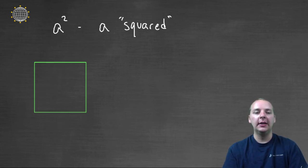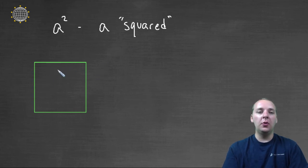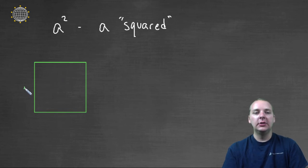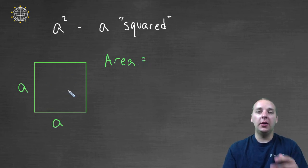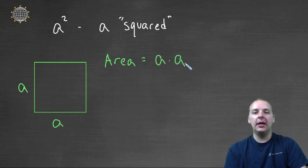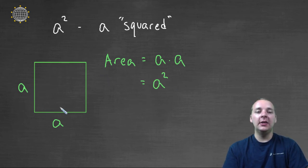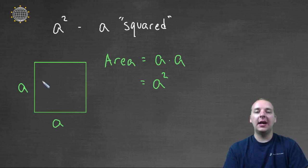There's a mathematical reason behind it. If you consider a square, one thing we know about squares is that they have equal sides. So this side may be length A, and if it is, then this side is also length A. What would the area of this square be? Well, areas of squares are length times width, which in our case would be A times A, which would be A raised to the second power. And so that's why we say it's A squared, because that would be the area of a square where each side has length A.